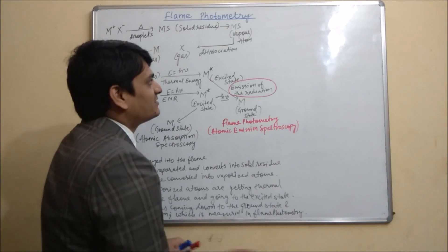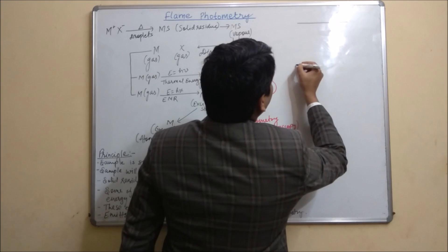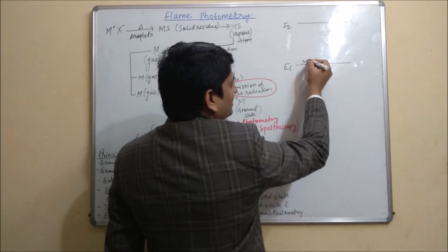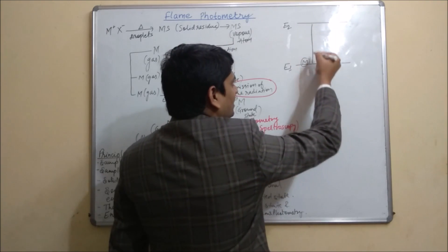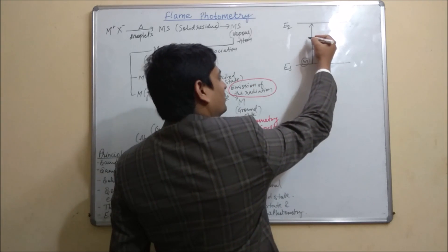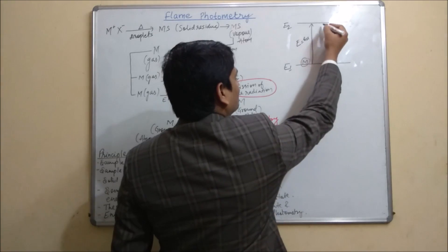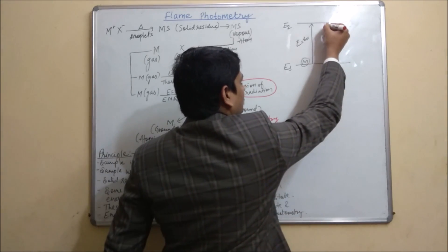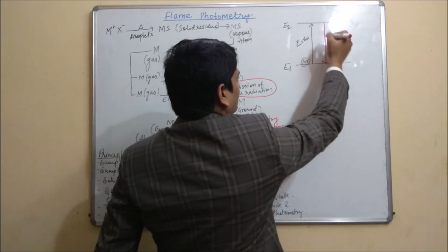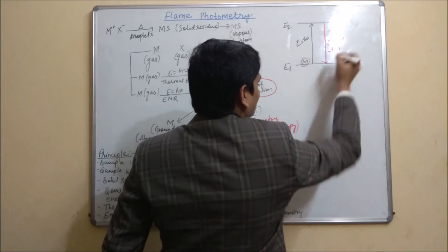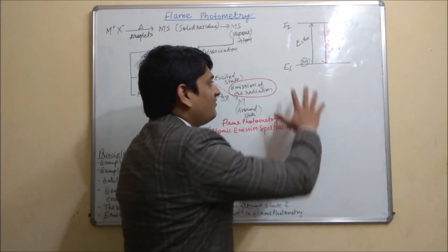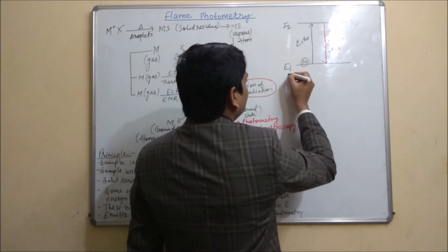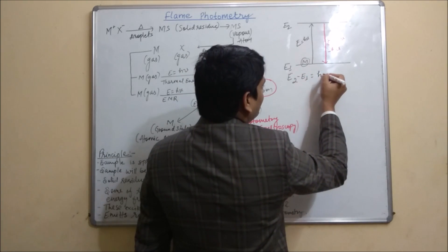Now coming to the energy levels — taking the example of two energy levels E1 and E2. The element gets some energy equal to hν and goes to the excited state E2. Then it comes back to the ground state from E2 to E1, emitting energy equal to hν. If we want to calculate the energy difference between both points, from excited state to ground state, it will be: E2 minus E1 equals hν.